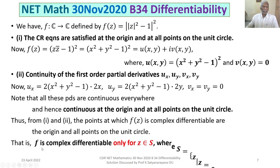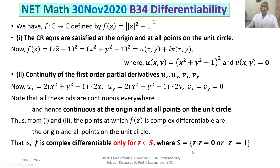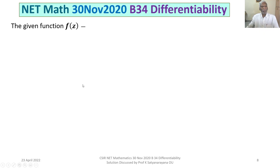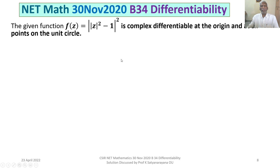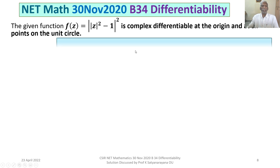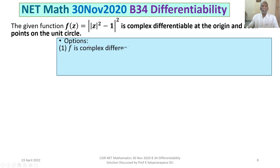That is, f is complex differentiable only for z belonging to the set S, where S consists of all z such that z = 0 or |z| = 1. To summarize: the given function is differentiable at the origin and at all points on the unit circle. Now let us look at the options.